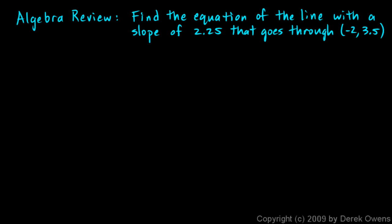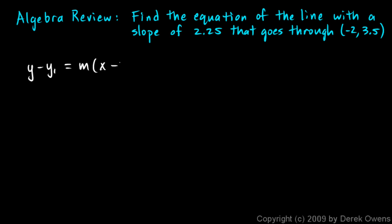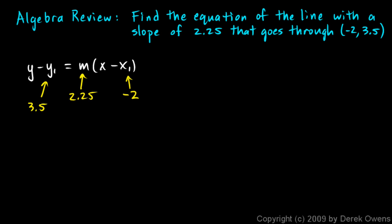We're told to find the equation of the line with a slope of 2.25 that goes through negative 2, 3.5. So we have a point and a slope. What comes to mind is the point-slope form of an equation for a line: y minus y1 equals m times x minus x1. We put in these values — 2.25 is the slope, x1 is negative 2, and y1 is 3.5.